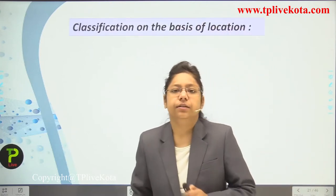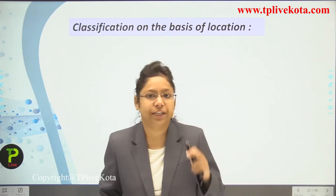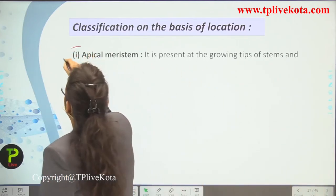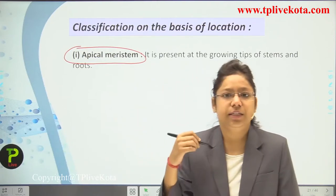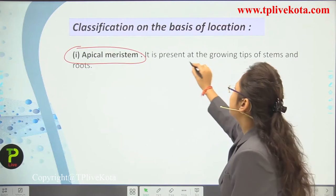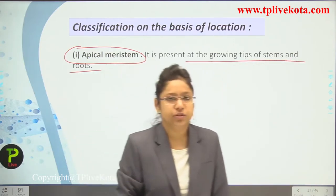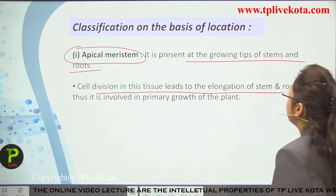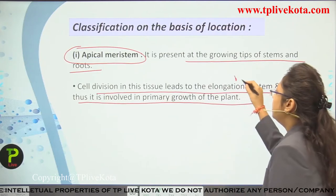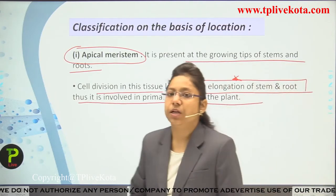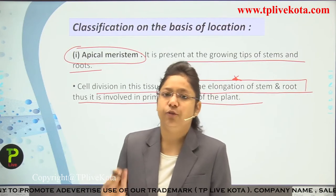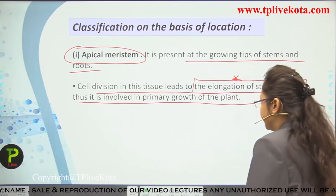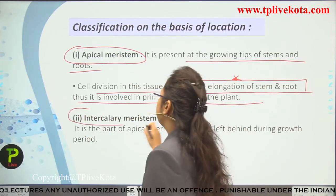Classification based on location: First, apical meristem — present at the growing tips of stems or roots. Cell division in this tissue leads to elongation of stem and root, so it is involved in the primary growth of the plant. This is very important — apical meristem is responsible for elongation of both root and shoot.